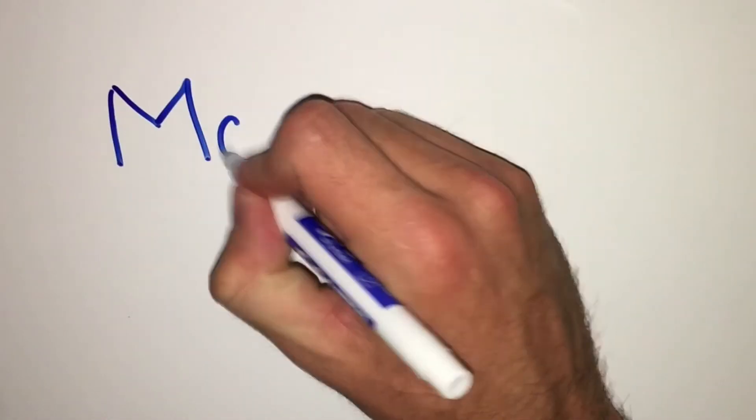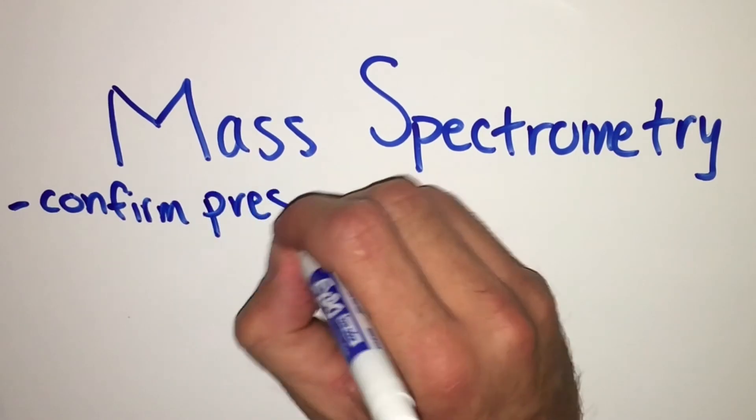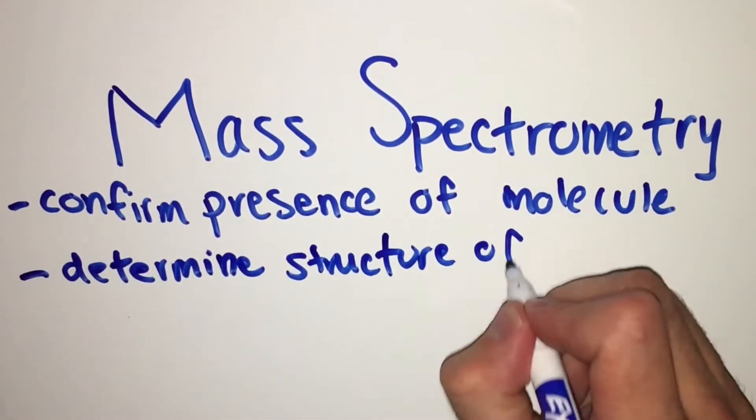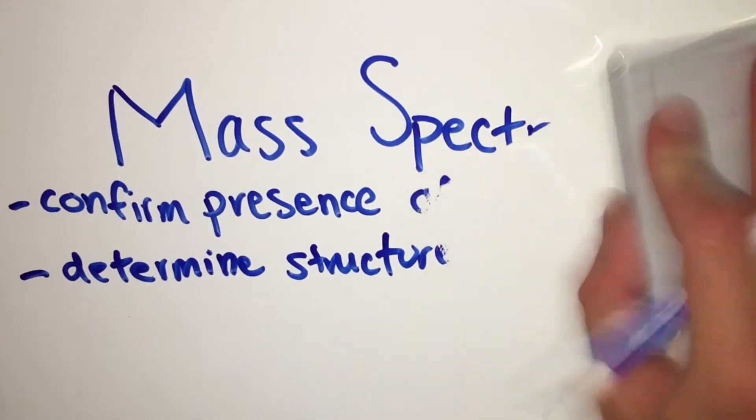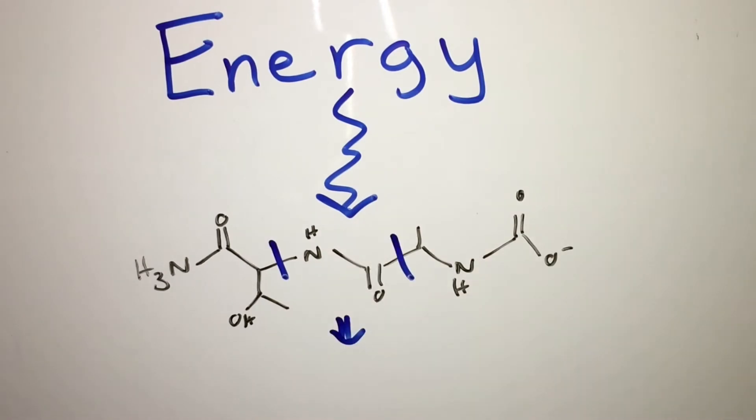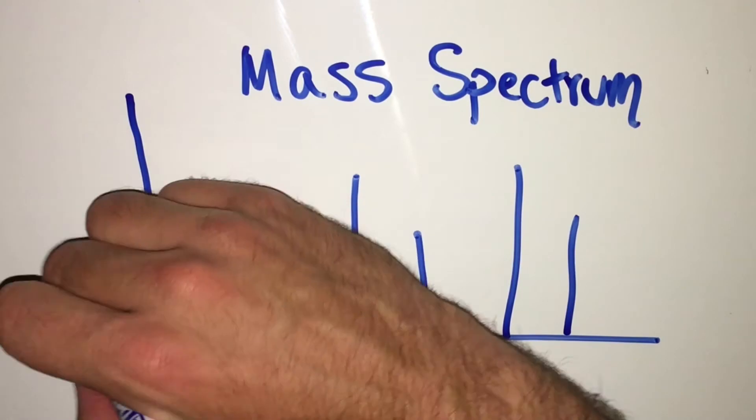The next technique we'll discuss to quantify the cell is mass spectrometry. For molecular biologists, mass spec can be used to confirm the presence of a molecule in a cell, as well as determine the structure of that molecule. The technique relies on the ability to use energy to break apart a molecule into several pieces of varying sizes. A charge is imparted on some or all of the pieces, creating positively charged ions. These ions are then separated and analyzed according to their mass-to-charge ratio, which is denoted as m over z.